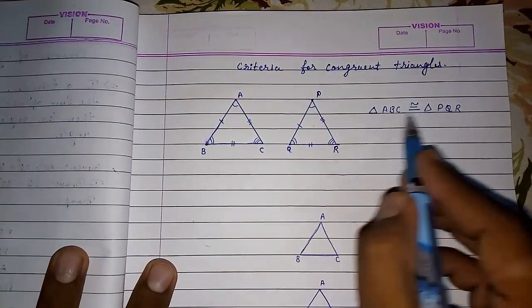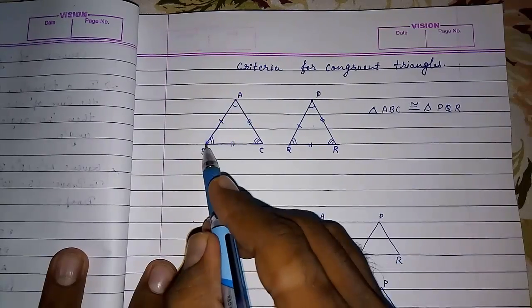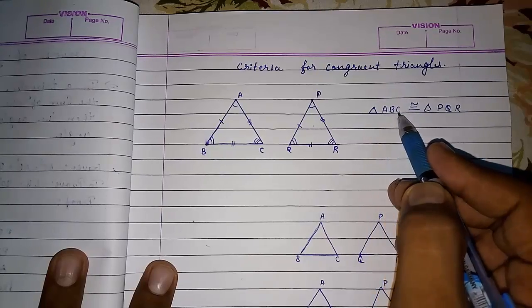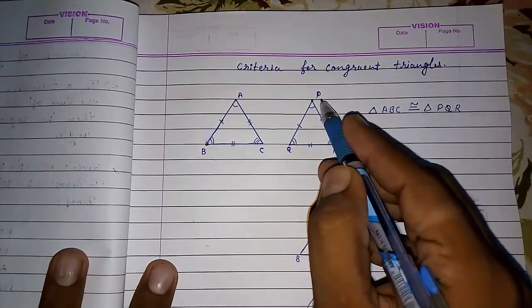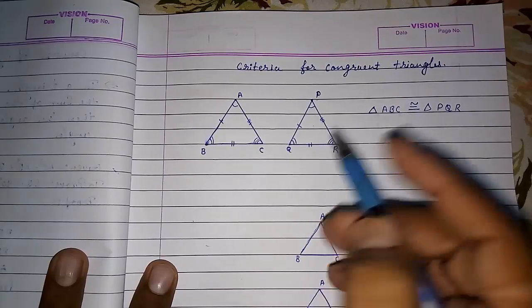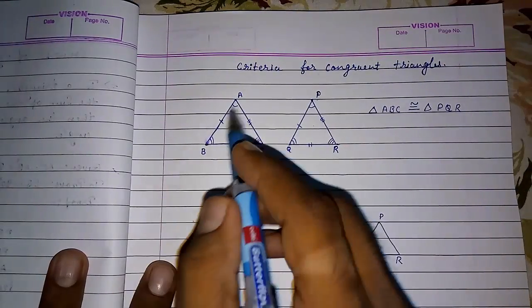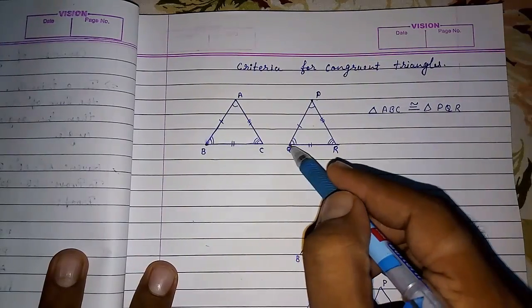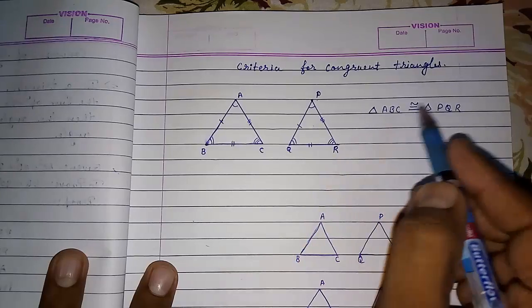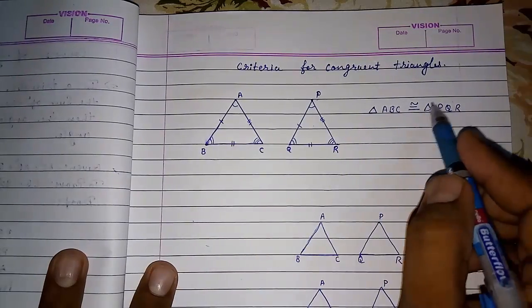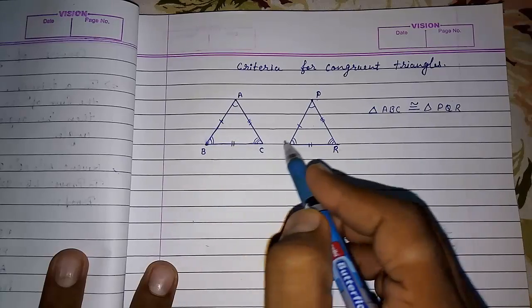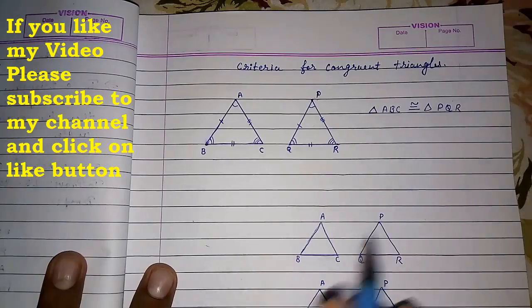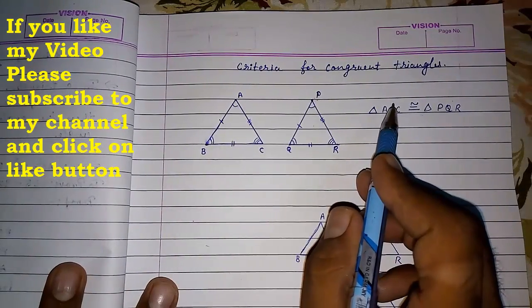Now, a common mistake made by students: we are always taking ABC and PQR, so students always write triangle ABC congruent to triangle PQR. But sometimes Q is here and P is here. At that time you have to write triangle ABC congruent to triangle QPR. So keep a watch on the vertices — if your vertices are wrong, your triangle congruency will become wrong.